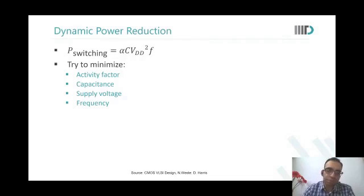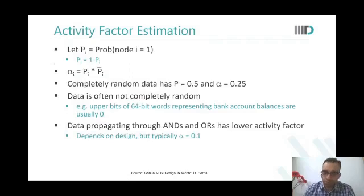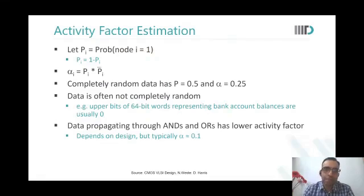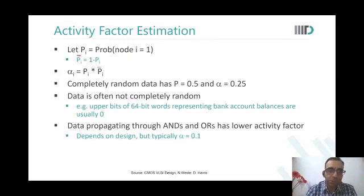Let us look at activity factor in a little more detail — it will become abundantly evident how to reduce it. The probability p_i is the probability of node i being equal to 1. The probability p_i-bar, the probability of node i being equal to 0, is 1 minus p_i. And activity factor alpha is p_i times p_i-bar.